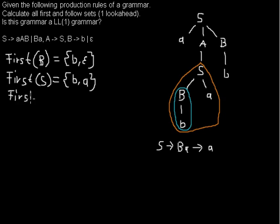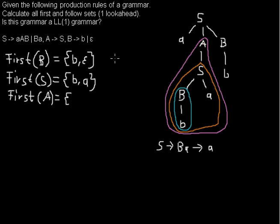Now I want to calculate the First set of A. Because we have the chain rule A goes to S, everything that is in the First set of S will also be in the First set of A, because A just derives to S — that gives us the First set of A because of this chain rule.